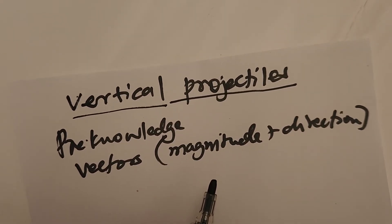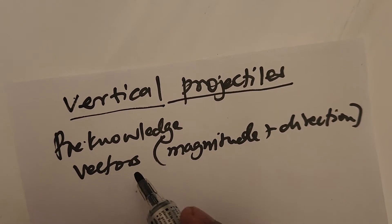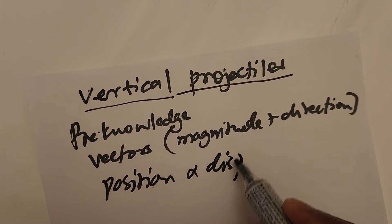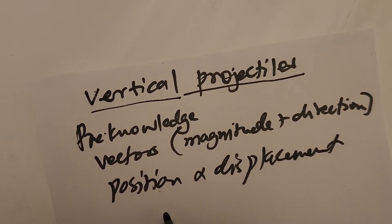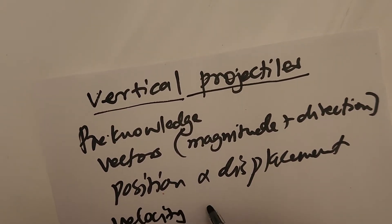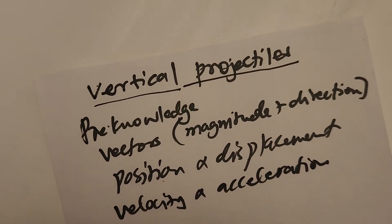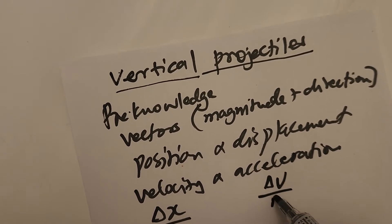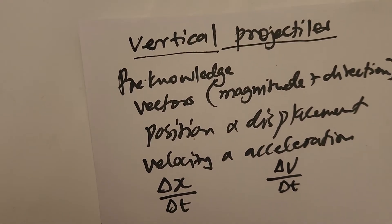We learned about position and displacement of objects, as well as distance. We also learned about acceleration and velocity. Remember the definitions: velocity is the rate of change of position, whereas acceleration is the rate of change of velocity.